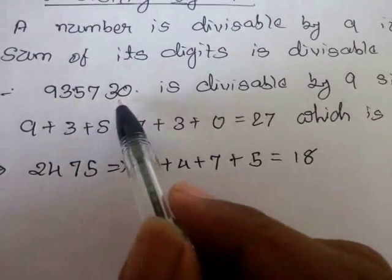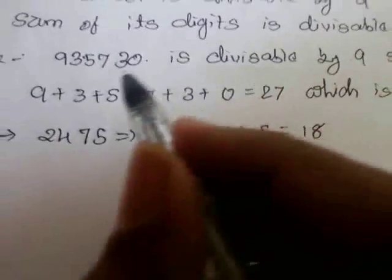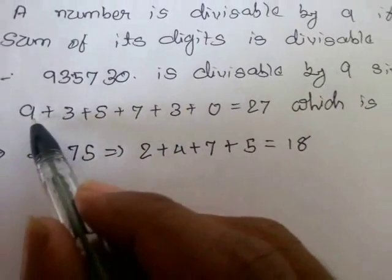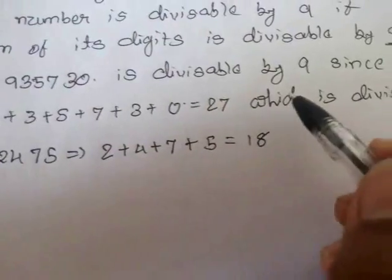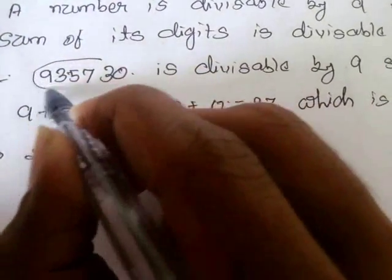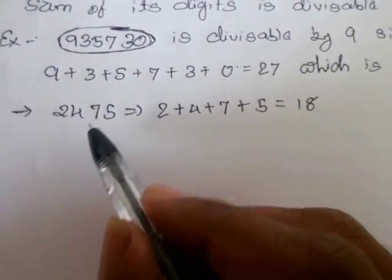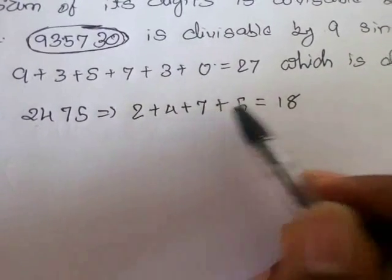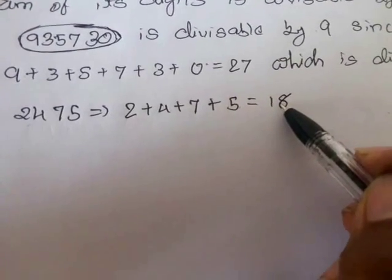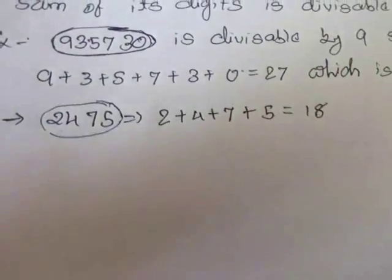For example, 9,35,730 is divisible by 9 since the sum of its digits — 9 plus 3 plus 5 plus 7 plus 3 plus 0 — gives us 27, and 27 is divisible by 9. Let's take another example: 2475. Here, 2 plus 4 plus 7 plus 5 gives us 18, and 18 is divisible by 9, so this number is divisible by 9.